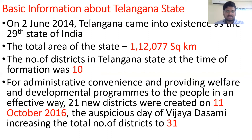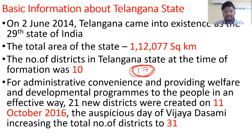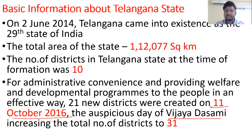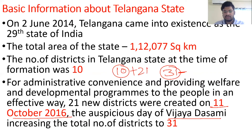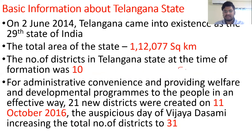Later, in August 2016, a cabinet committee was formed under the leadership of Muhammad Ali. This committee suggested the formation of 7 to 17 districts, but due to some agitations, a high-power committee was formed under the leadership of K. Keshav Rao, which suggested 31 districts. On 11th October 2016, on the auspicious day of Vijaya Dasami, the total number of districts was increased to 31 — adding 21 to the original 10.